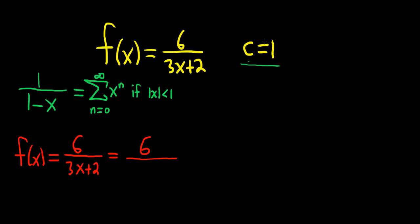And we know that c equals 1 has to be our center. So this piece here needs to be x minus 1 to the n, not x to the n. See here the center is 0. We want something like x minus 1 to the n. So this piece here, this x, needs to be x minus 1. So what we do is we just write down what we want. So x minus 1.